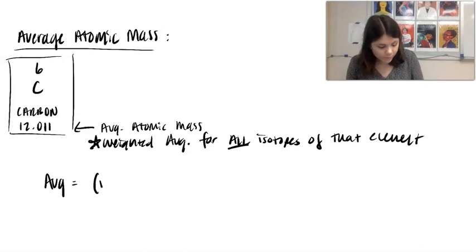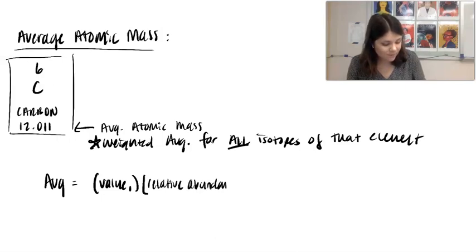What you do is you take the value of your first one and you multiply it by the relative abundance, and I'll talk about what that is in just a second. The relative abundance of that value.